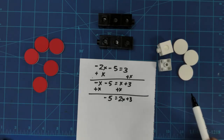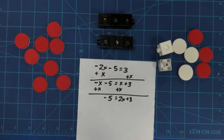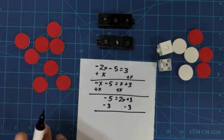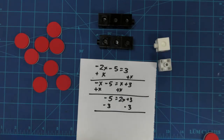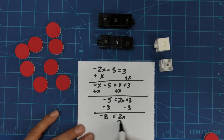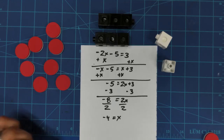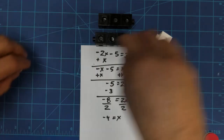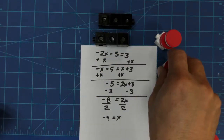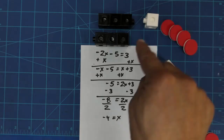Now these negatives have got to go. We can only add things, so I add negative 3 to both sides. Negative 3 and negative 3 zero out the positives, leaving 2x on one side and negative 8 on the other. Now I divide by 2. That gives negative 4 equals x. Each pile has 4 red tiles, so x equals negative 4.